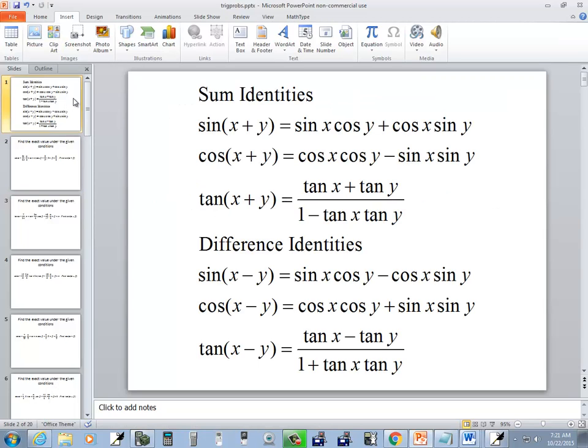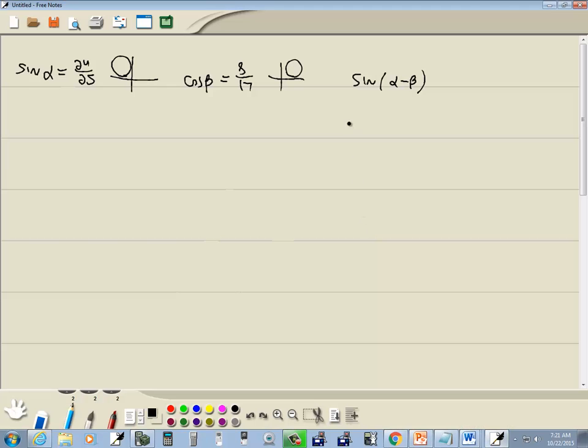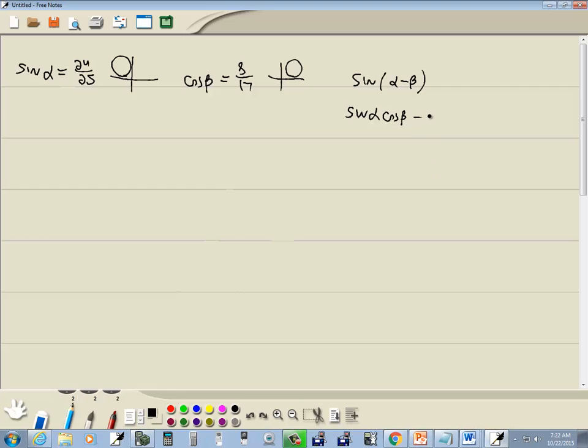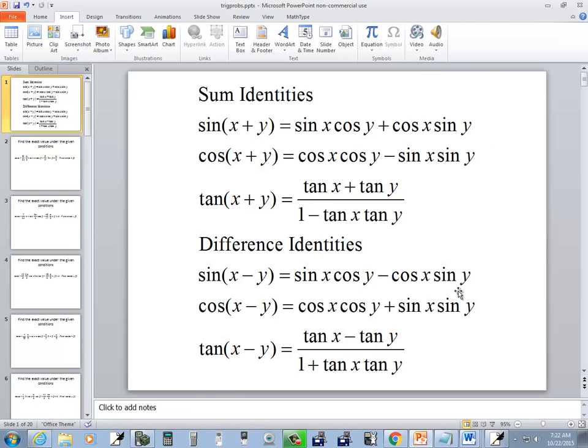If we go back to our formula, sine of alpha minus beta, that's a different identity down here, the sine. So I can rewrite it this way. And I'll go ahead and just put my alpha and beta in there. So this is equal to sine alpha cosine beta minus cosine alpha sine beta.